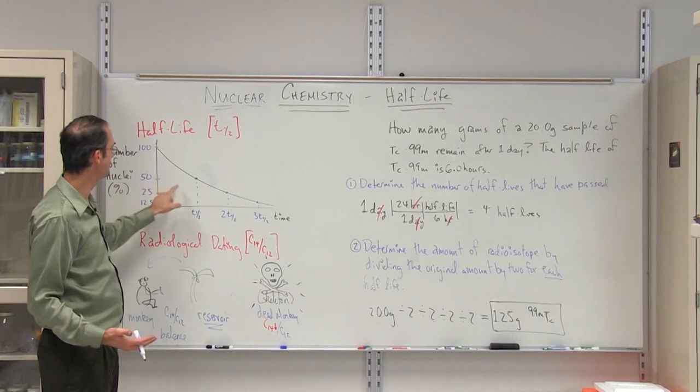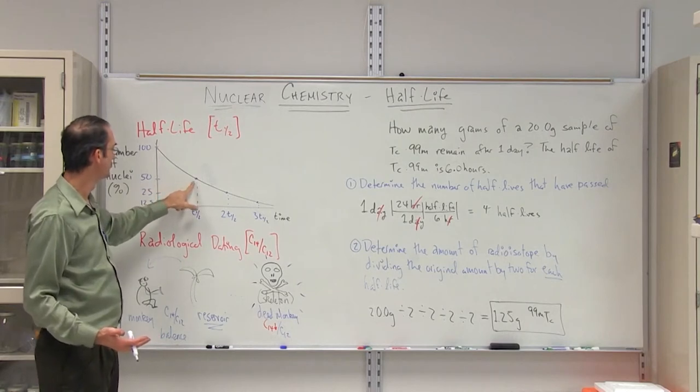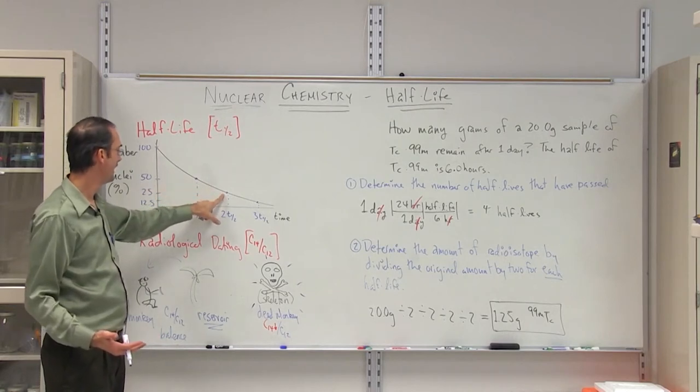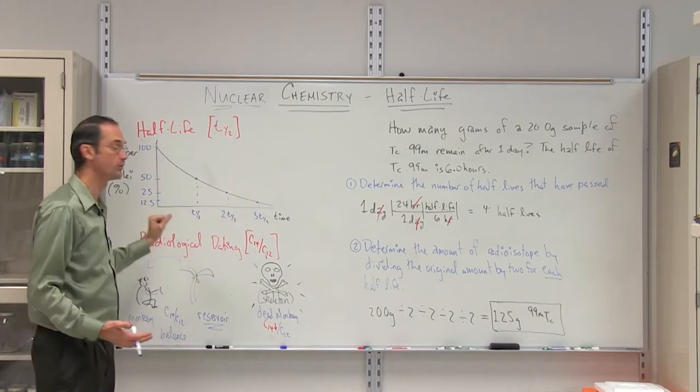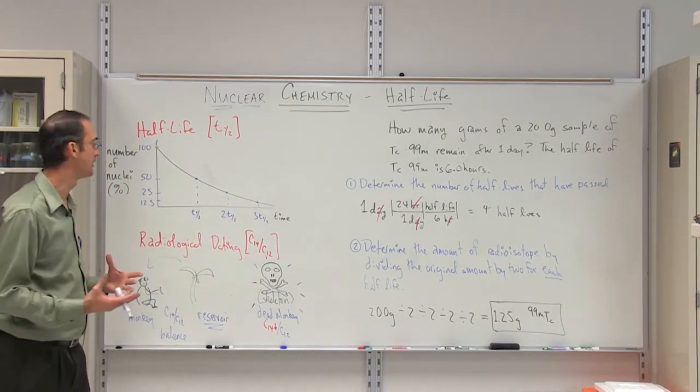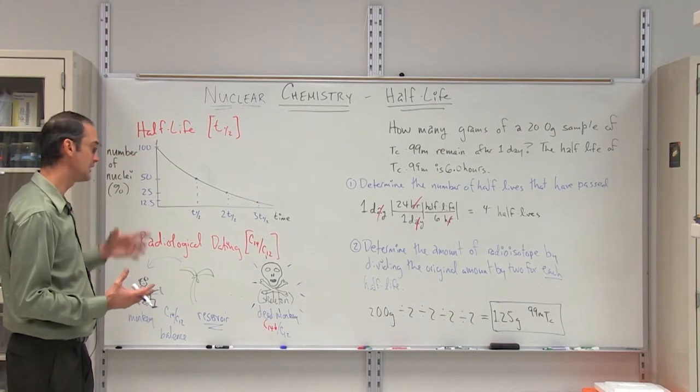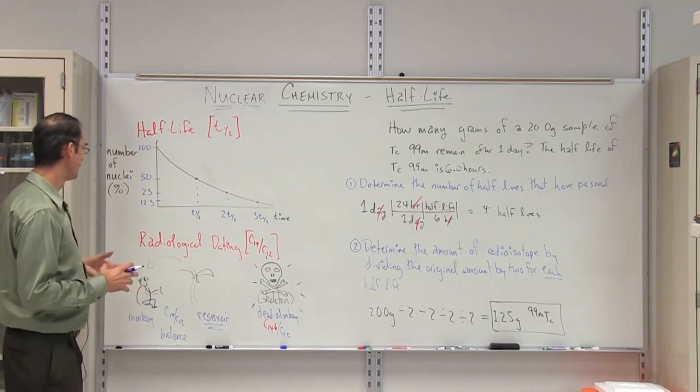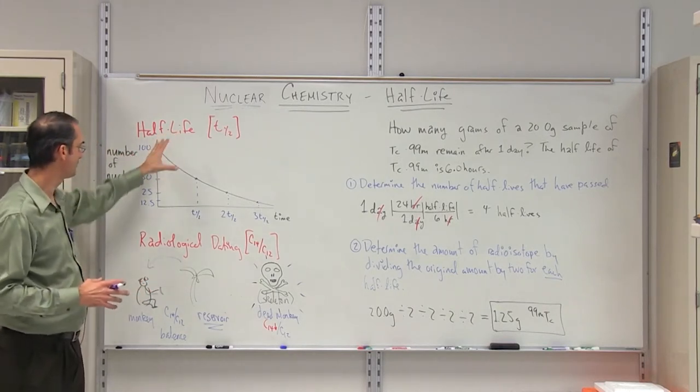So you go down to 50% after one half-life, 25% after two half-lives, and after a third half-life you go down to only 12.5% of the amount that was originally in the sample. So that's the concept of half-life.